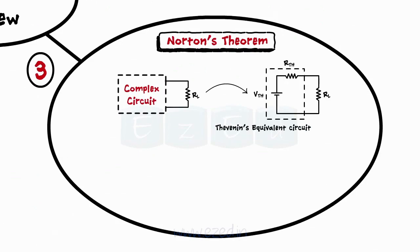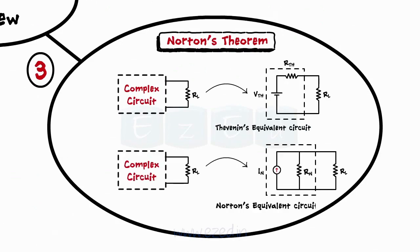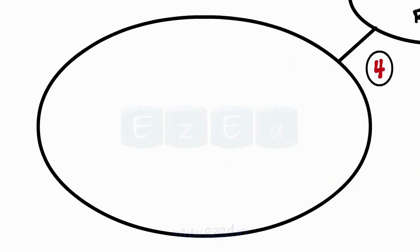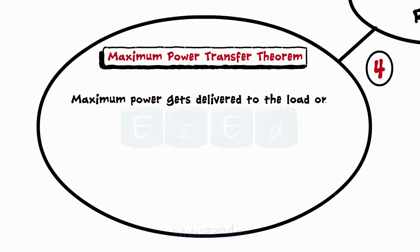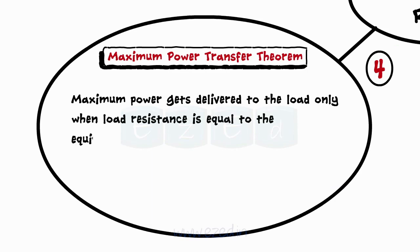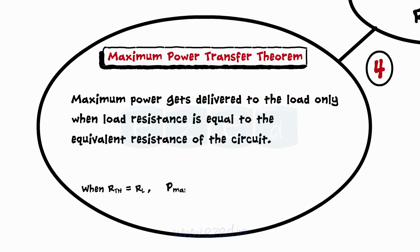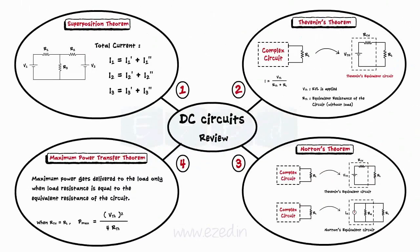The third theorem is very similar to Thevenin's. The only difference is that in Norton's Theorem, the complex network is replaced by Norton's current source IN and Norton's resistance Rn in parallel with the load. Maximum Power Transfer is the last theorem, which states that maximum power is delivered to the load only when load resistance equals the equivalent resistance of the circuit. Maximum power equals Vth squared upon 4 times Rth. With this, we come to the end of this Easy Ed video lecture.